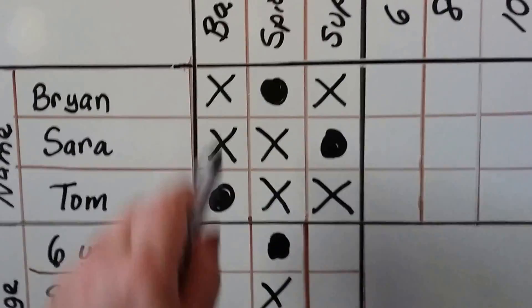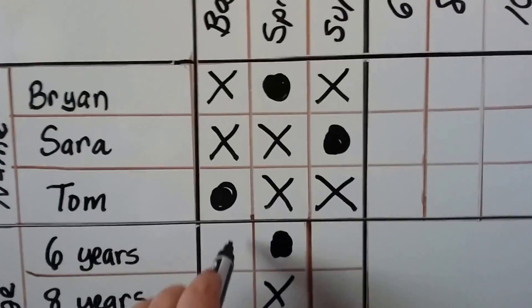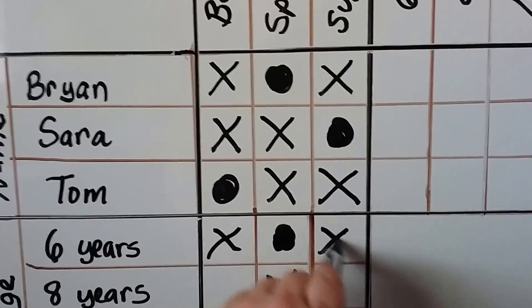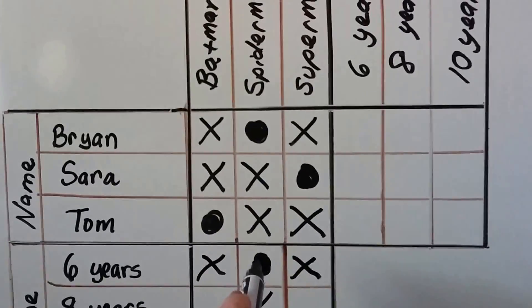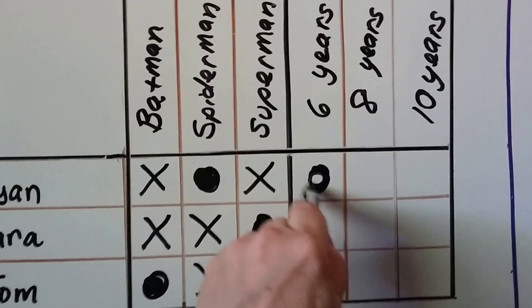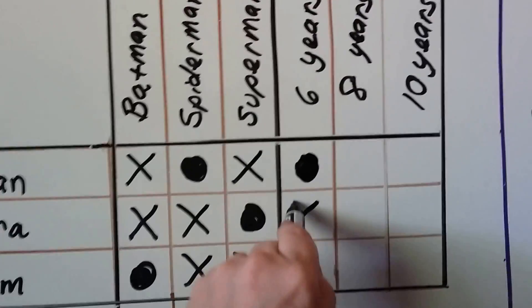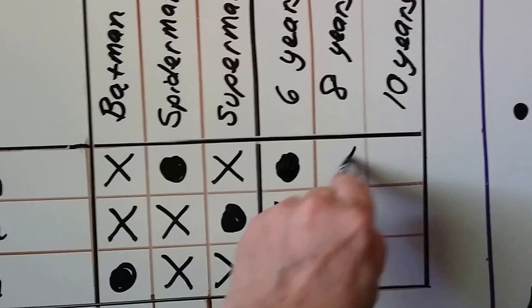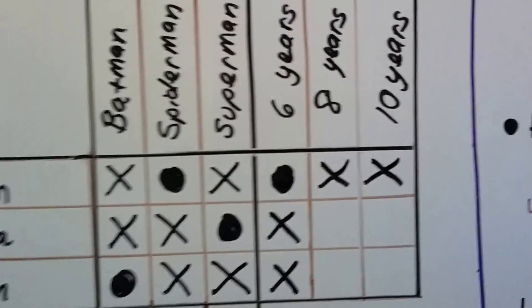And the six-year-old is not Batman or Superman, so we could put X's here. We can also say the six-year-old is Spider-Man, so we can do the dot here for six-year-old and Spider-Man, and fill in the X's for the other boxes because they can't be the six-year-old or Spider-Man.